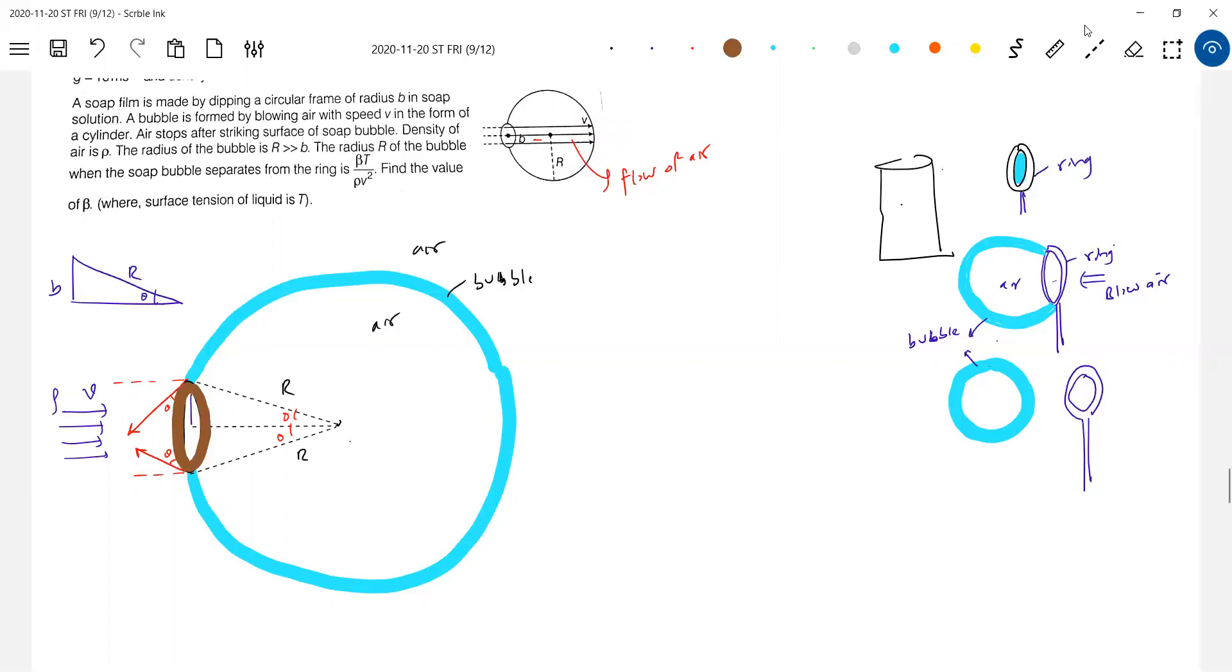So the flowing air from the ring, through the ring, the person will be blowing. So this air, what happens when it comes in contact with the bubble now, it will come to rest. So will it exert any force? Yes. Okay. The flowing air exerts force on the bubble surface. That is equal to F.